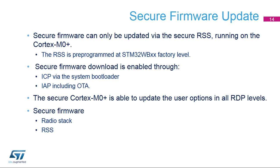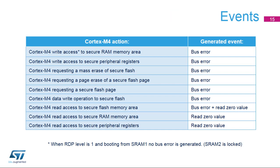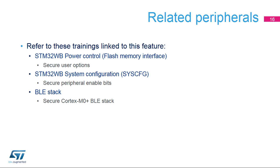Secure Cortex-M0 Plus software update is possible in all read protection levels: 0, 1, and 2. This slide lists the events generated by the Cortex-M0 Plus security feature. Events are only generated to the non-secure Cortex-M4. Depending on the Cortex-M4 access type, a bus error is generated to the non-secure Cortex-M4. Reading secure areas returns 0s. Only the secure user options and system configuration peripheral security enabled bits can be read by the non-secure Cortex-M4. In addition to this training, you may find the flash memory interface and system configuration modules useful.